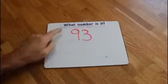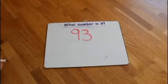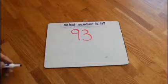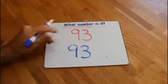Read along with me. What number is it? 93. How do we write a 93? A 9 for the tens, a 3 for the ones, 93.